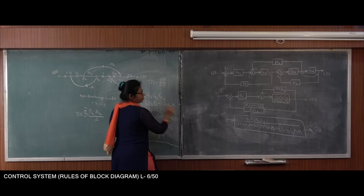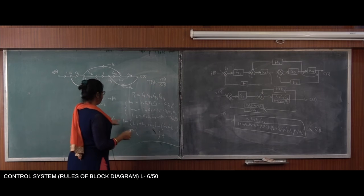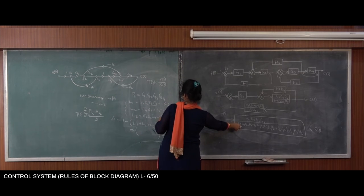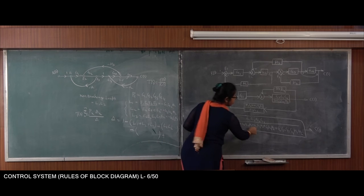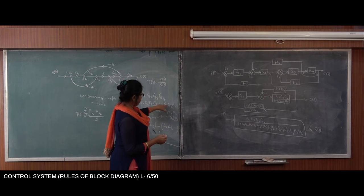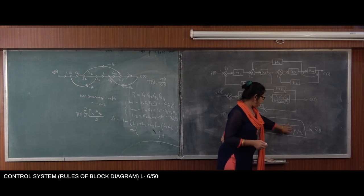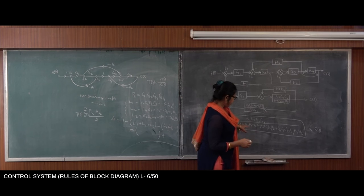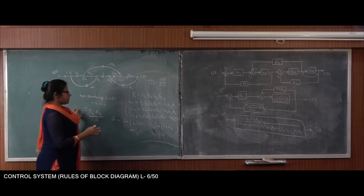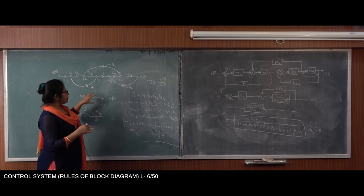There is only one forward path, so P equals G1 G2 G3 G4. The denominator delta is 1 minus the sum of individual loops L1 plus L2 plus L3, plus the product of the two non-touching loops L1 and L2, which gives the term G1 G2 G3 G4 H1 H2. Using this formula we can easily go from signal flow graph to block diagram or from block diagram to signal flow for a system.